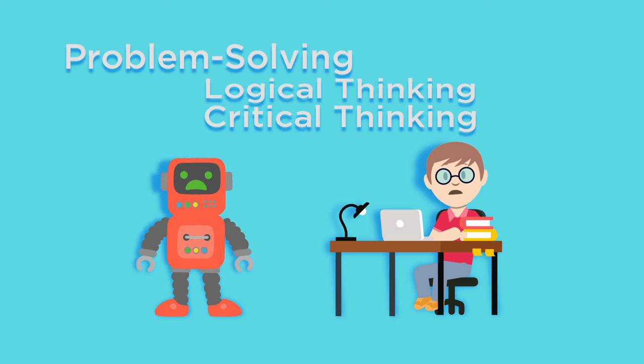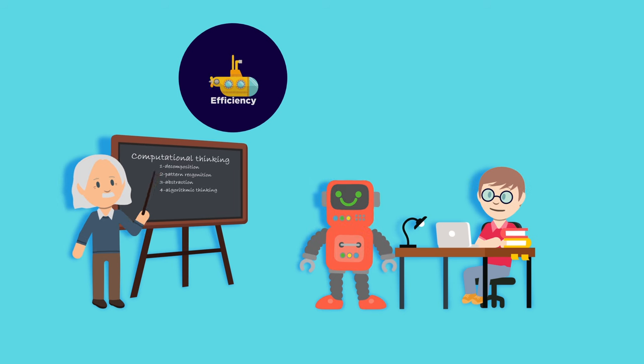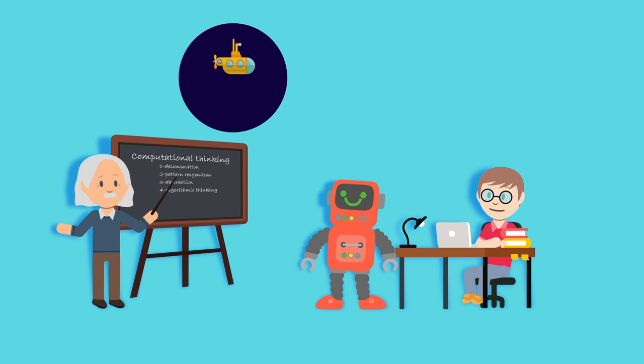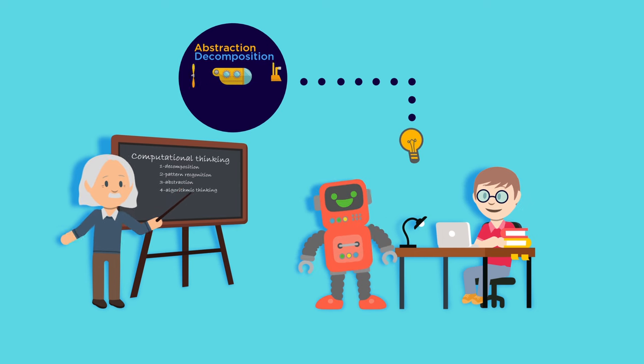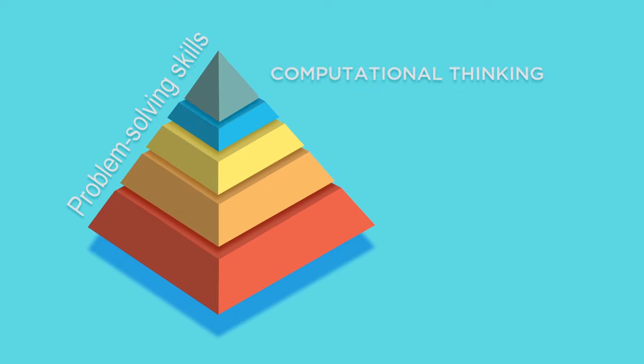Let's dive a little deeper. Computational thinking is about looking at a problem and solving it systematically. And therefore, arriving at a solution that both humans and computers can understand. Essentially, it is considered the highest order of problem-solving.